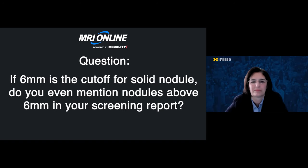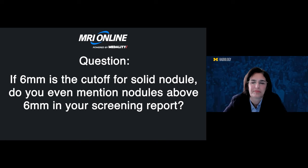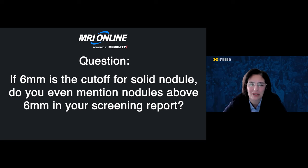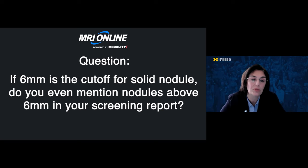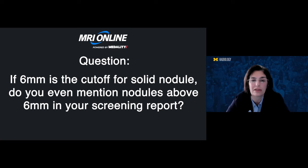If the six-millimeter cutoff is used for solid nodules, do you even mention nodules less than that in your screening reports? The reason we like to mention nodules under six millimeters is, one, to pay attention to them in follow-ups, and two, because smaller nodules still make somebody a category two and not a category one.